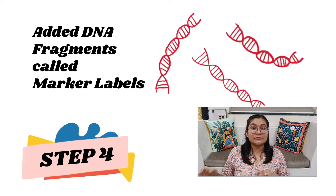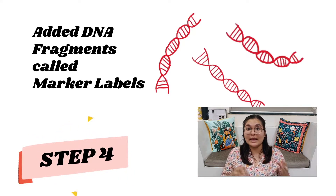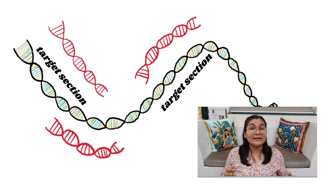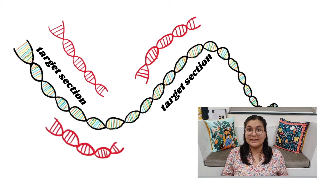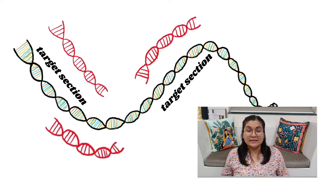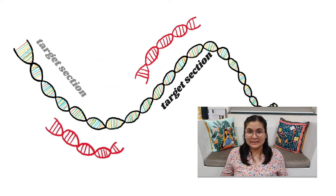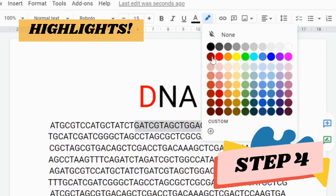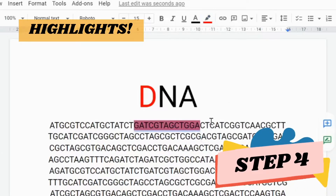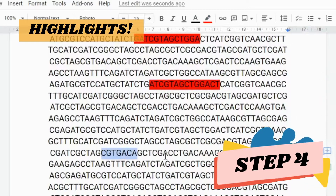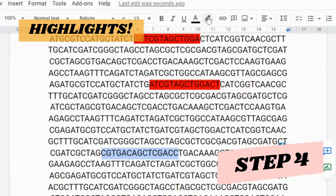Before we can go ahead, we need to make some additions to our sample DNA. Scientists add short additional fragments of DNA to the sample called marker labels. Their job is to find and attach to those segments of the sample DNA that actually belong to the virus — these are called target sections. This is like highlighting the important sentences of a project before making copies.